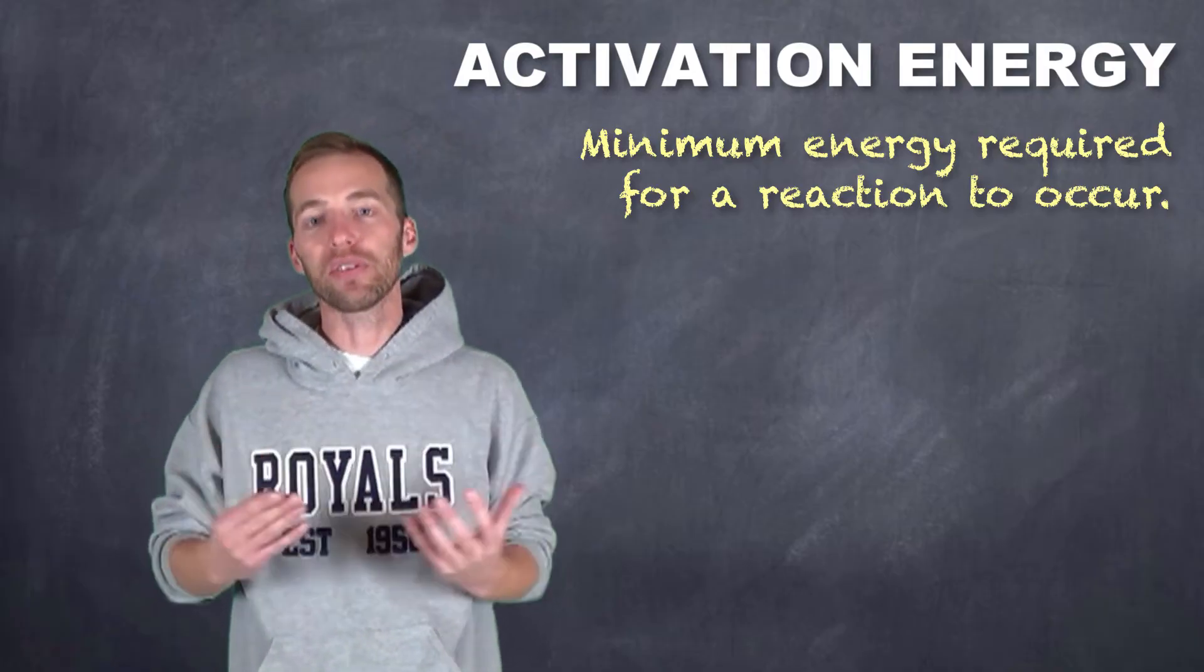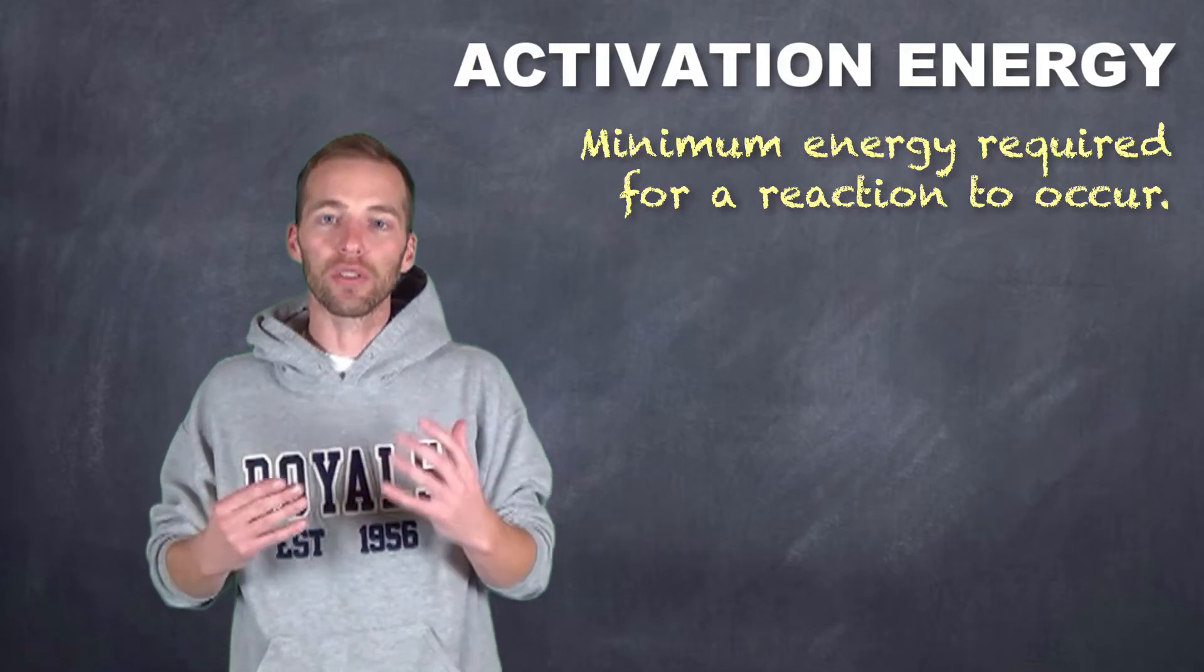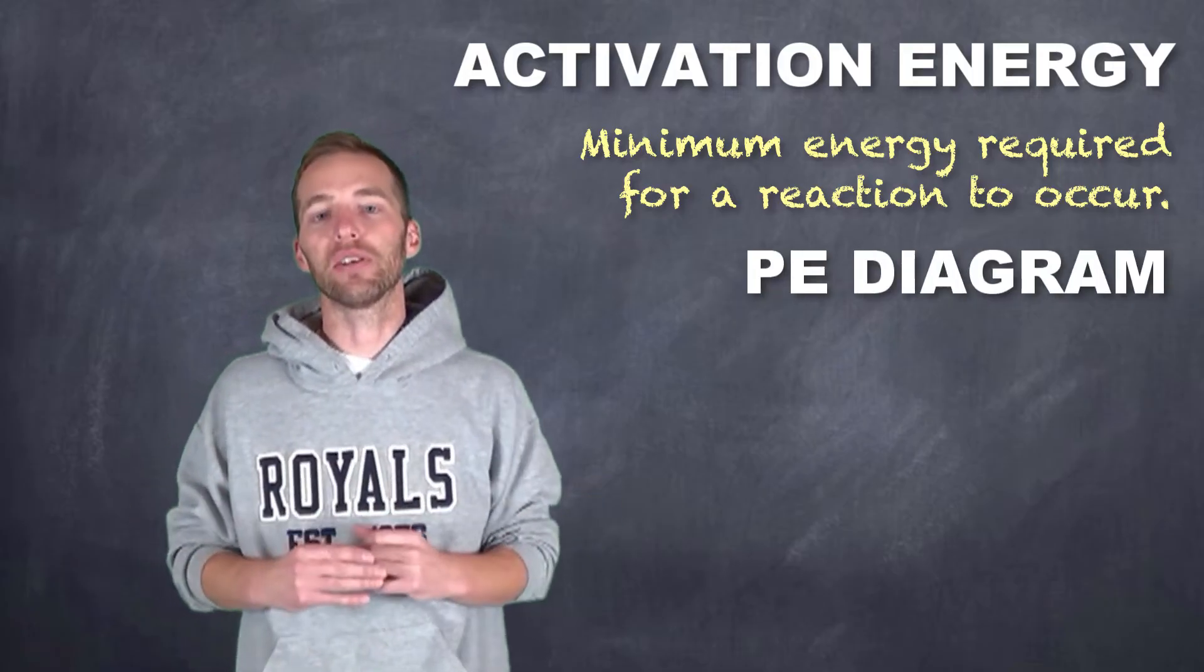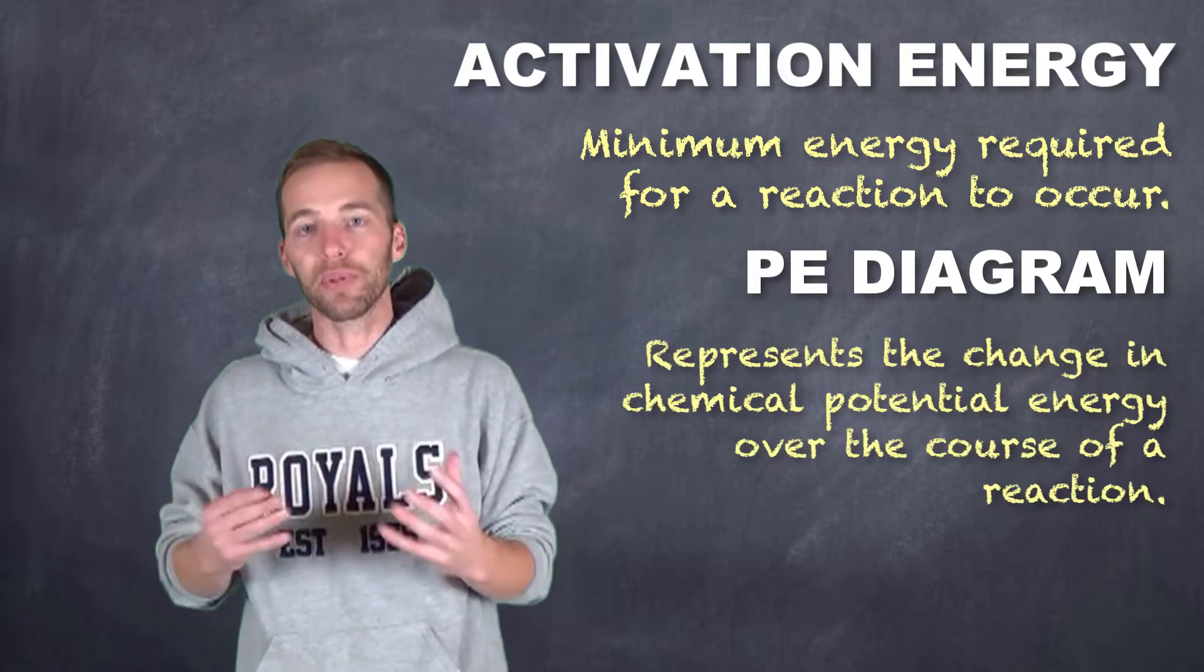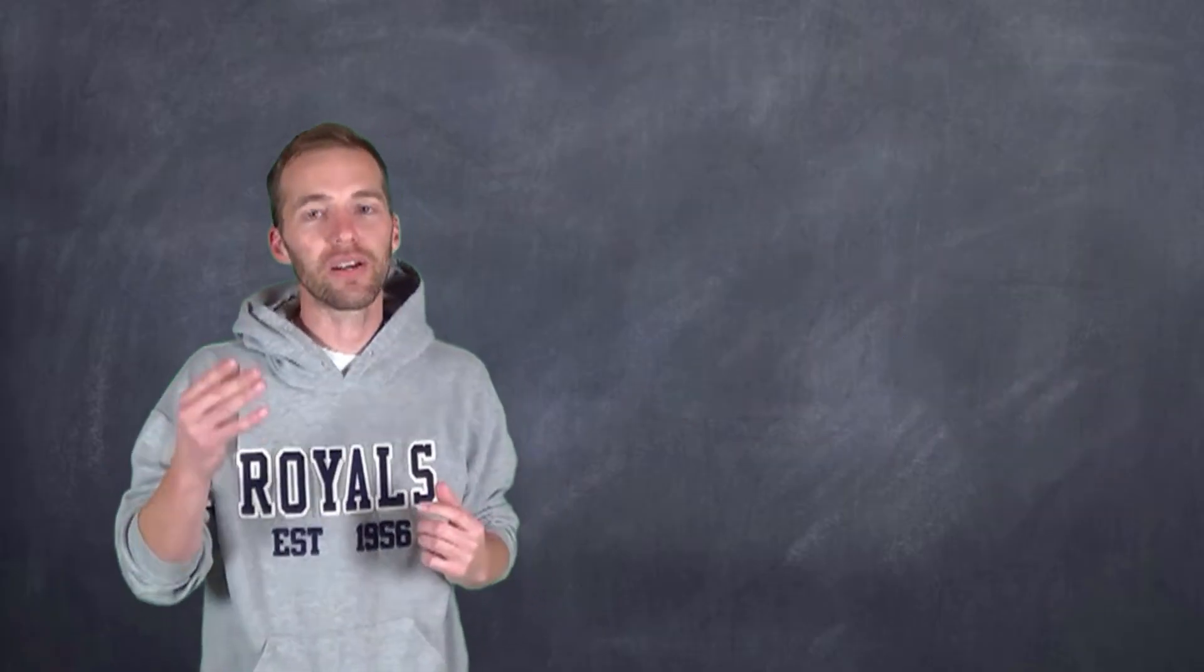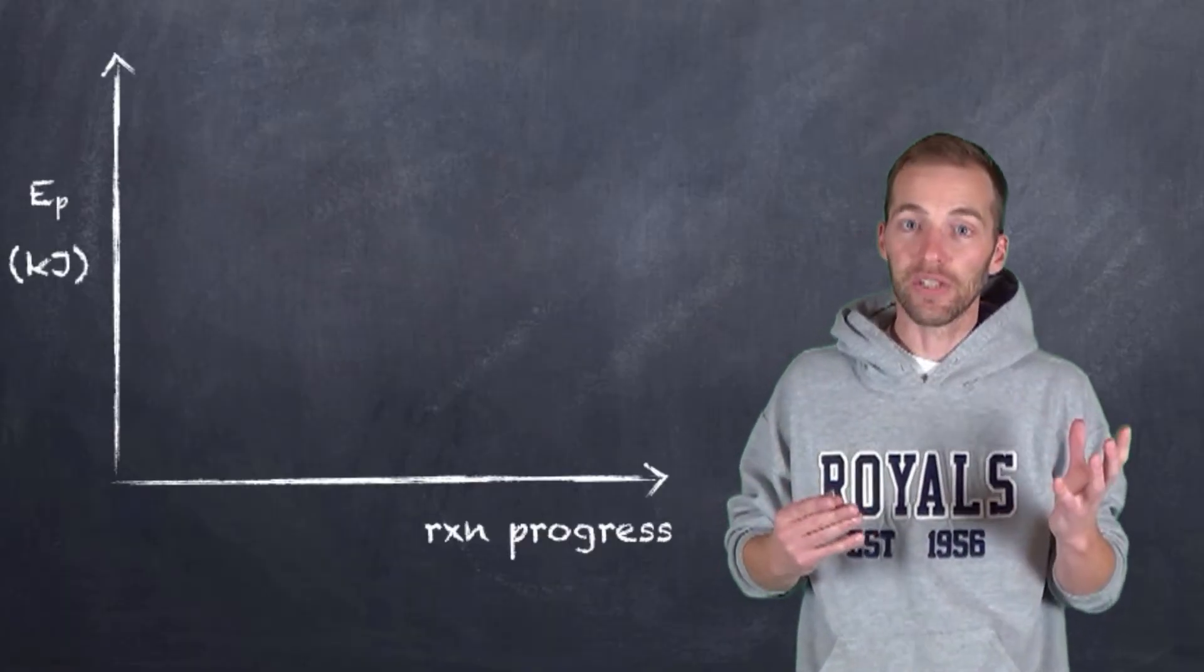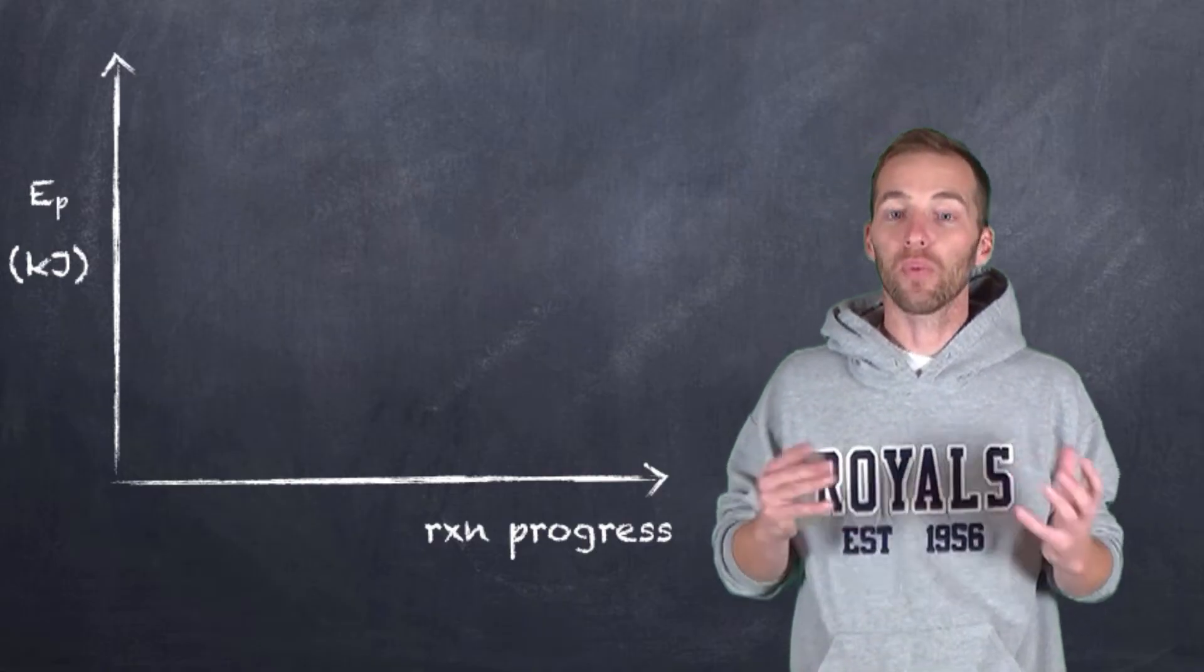And we represent these energies and the overall changes in energies from reactants to products in something called a potential energy diagram, which is really just a representation of the chemical potential energy as it moves throughout a reaction. So, let's take a look at how we would put together a potential energy diagram. On the vertical axis, we have potential energy or chemical potential energy. On the horizontal axis, we have reaction progress.